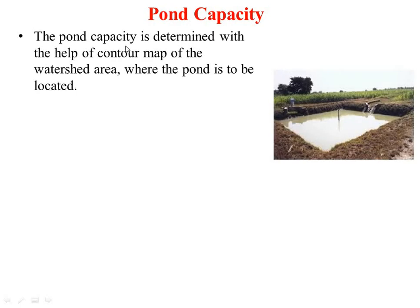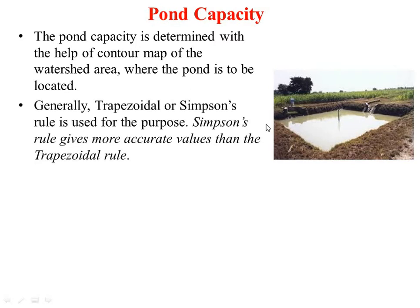Coming to the pond capacity: the pond capacity is determined with the help of a contour map of the watershed area where the pond is to be located. From the contour plan of the site, the capacity is computed for different stages using different area estimating formulae. Generally, the trapezoidal rule or Simpson's rule is used for the purpose. Simpson's rule gives more accurate values than the trapezoidal rule.